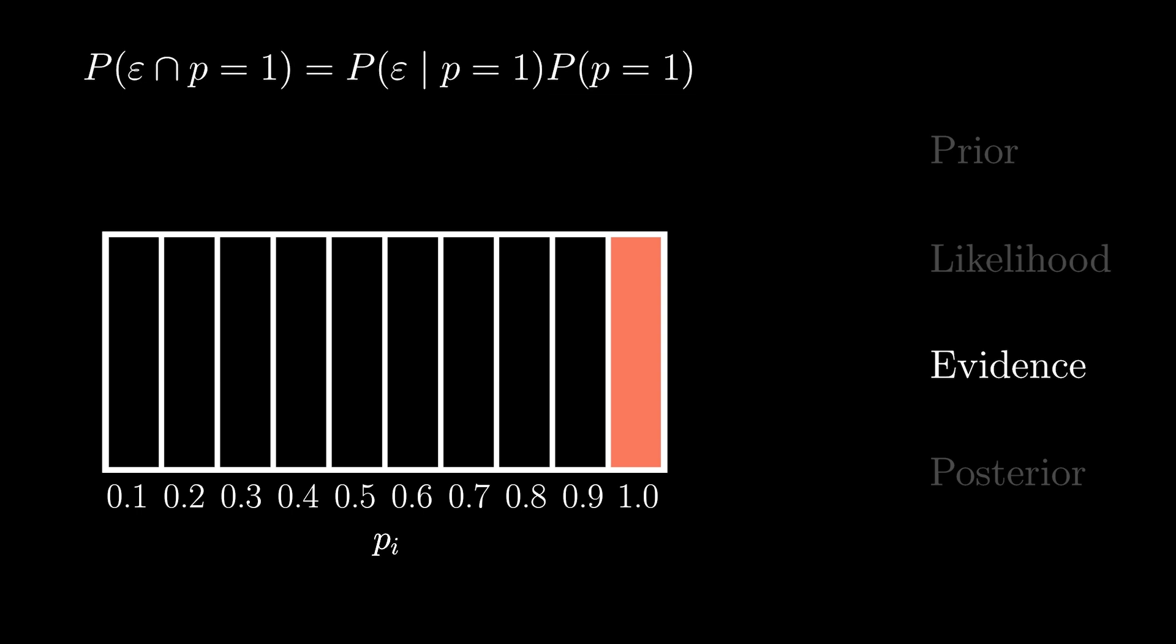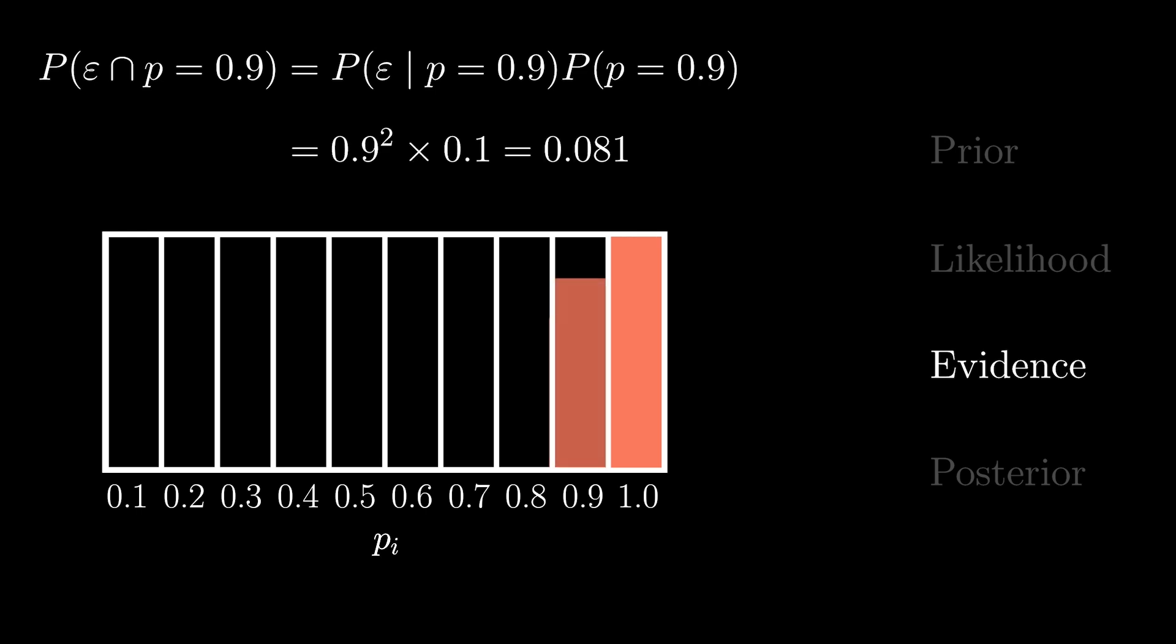To make sure that makes sense, try to answer a similar question: What is the chance of observing our data and having p equal 0.9? If you take the product of our likelihood and prior values, you should get 0.081.